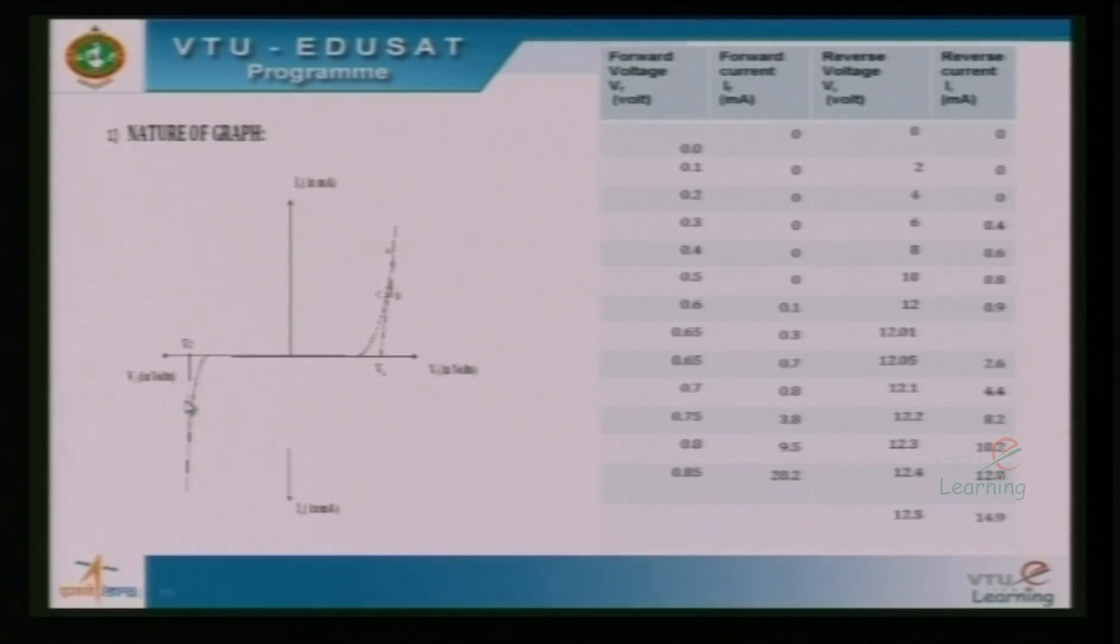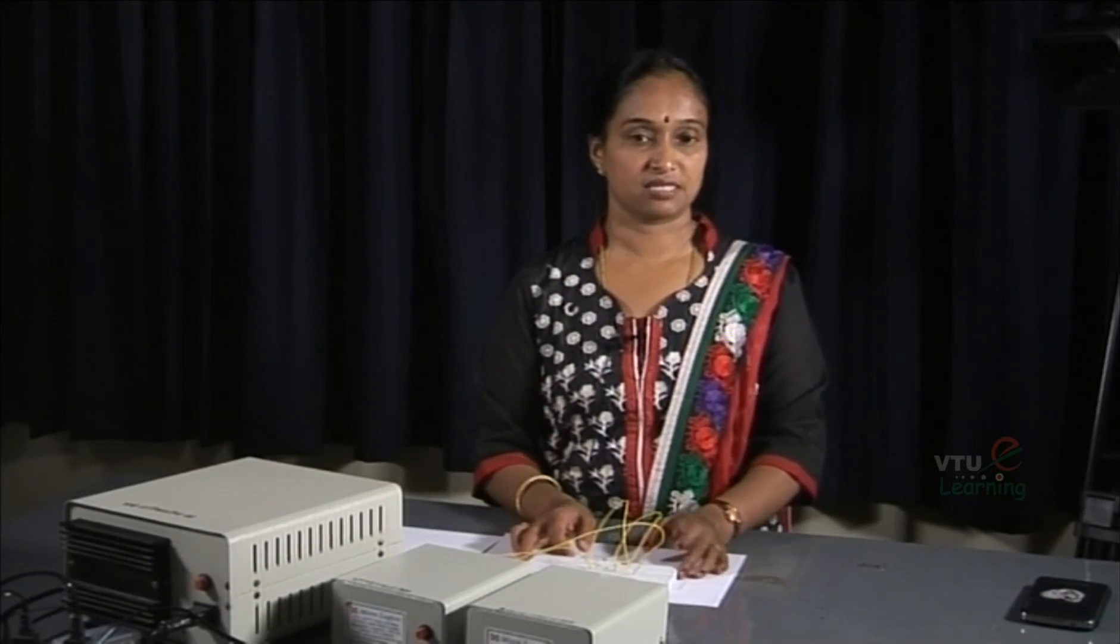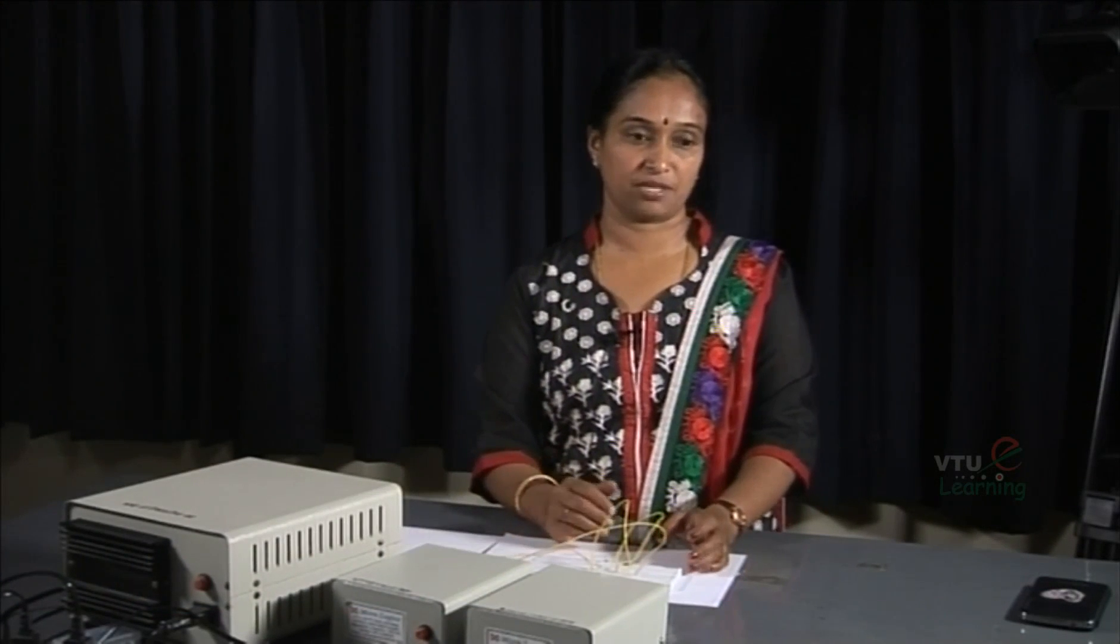A tangent drawn to the curve in the reverse bias characteristics extrapolated till it meets the x-axis. The corresponding value on the x-axis will give you zener breakdown voltage. As the given diode is having a breakdown voltage of 12 volts, we get the same value during the experiment.